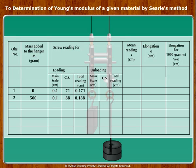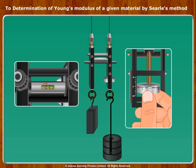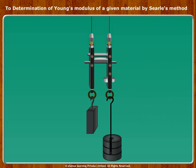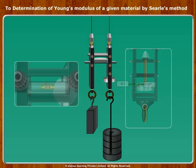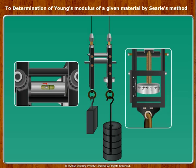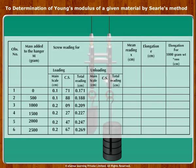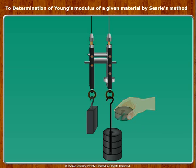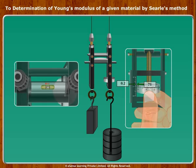This is observation number 2. Add mass of 500 grams successively and note the readings 4 more times. Then slowly unload in steps of 500 grams and note the corresponding readings in table 2.